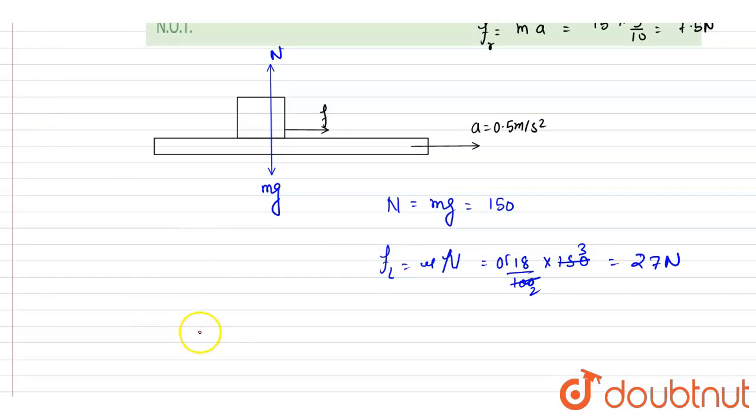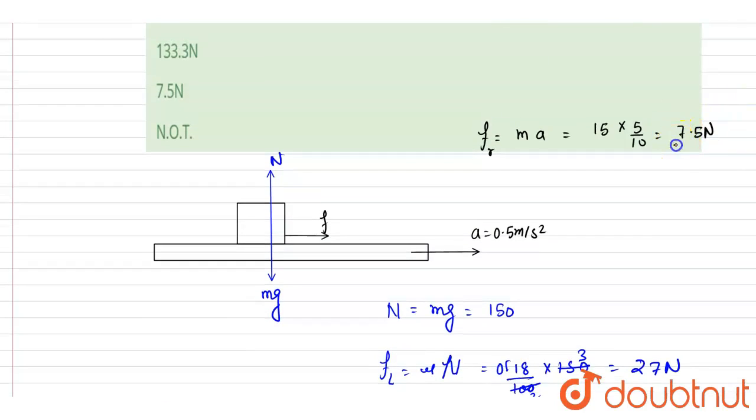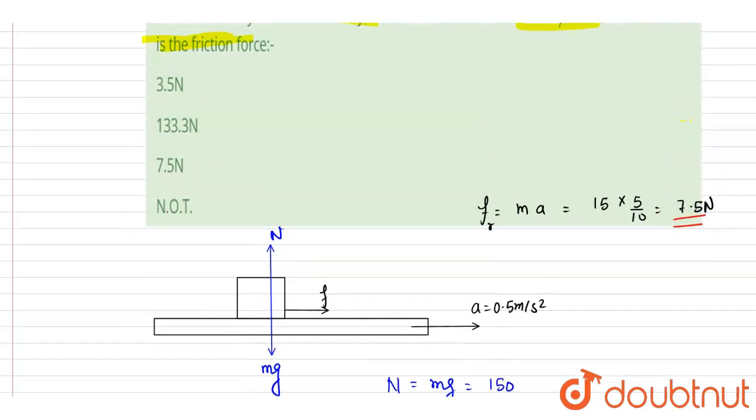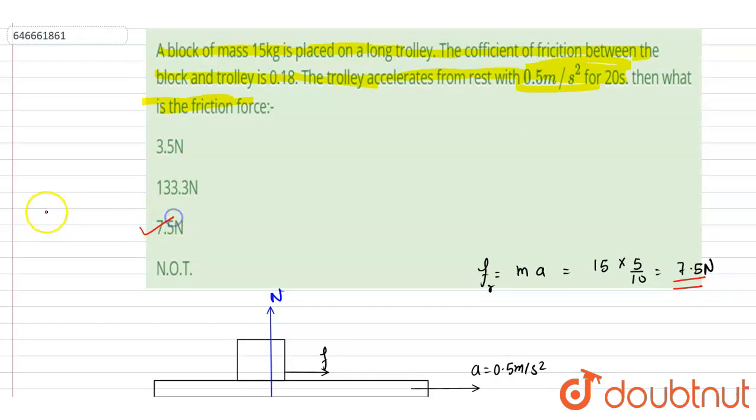is less than the availability. So only this much friction force is required to stop the relative motion. So 7.5 will be the friction force acting. So C is the correct answer. Thank you.